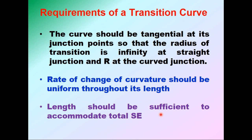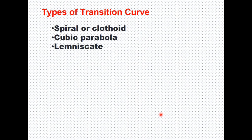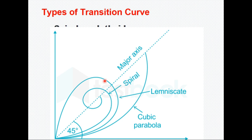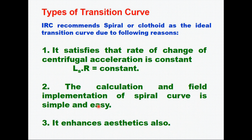Based on these three requirements, there are three types of transition curves generally used: a spiral or clothoid curve, a cubic parabola, and Bernoulli's lemniscate. The three curves are more or less similar for a very low deflection angle. The cubic parabola follows y equals a times x cubed. Bernoulli's lemniscate is also a good curve, but the spiral curve satisfies all the conditions of a transition curve — as length increases, the radius of the curve reduces.